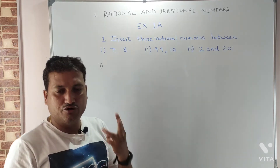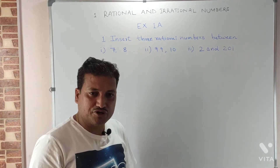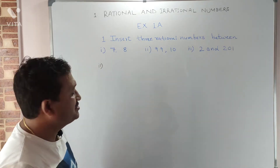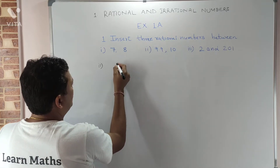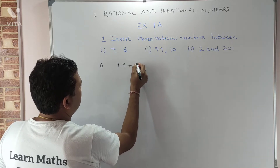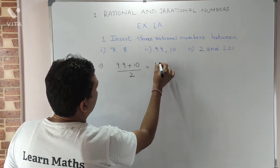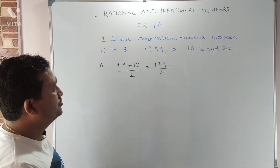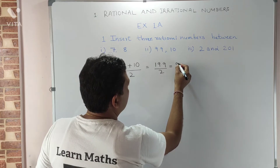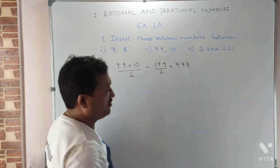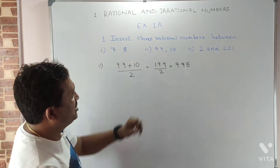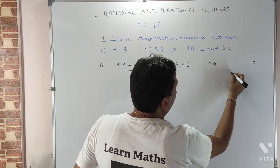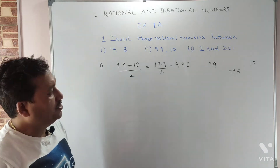Now for the second part: nine point nine and ten. We have to find three rational numbers between nine point nine and ten, using the same method. We add the two numbers and divide by two. So nine point nine plus ten upon two equals nineteen point nine upon two, and we divide to get nine point nine five. So nine point nine five is one of the numbers between nine point nine and ten.